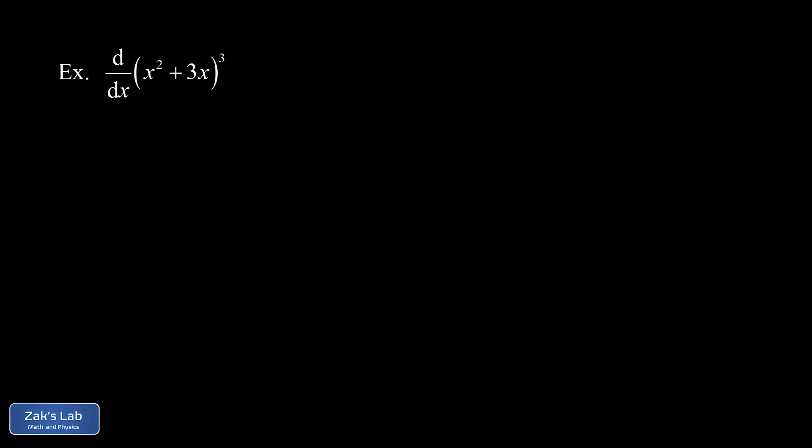So in our first example we aren't even using implicit differentiation, it's just a chain rule reminder. I just want the derivative of (x² + 3x)³.